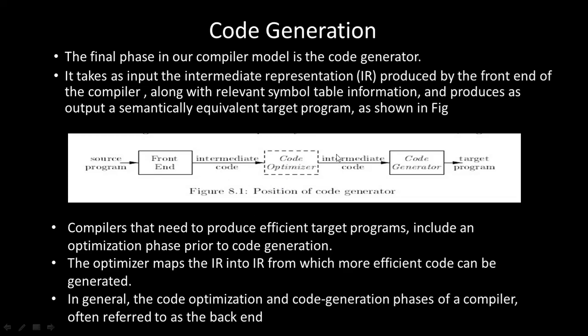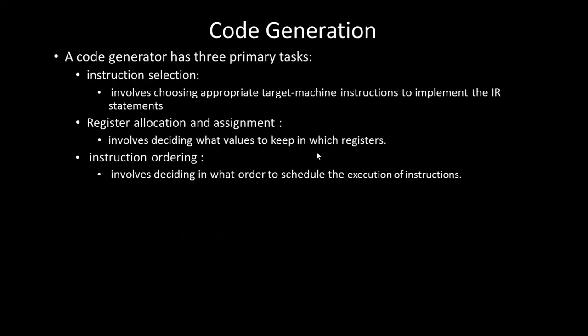The optimized intermediate code passes through the code generator phase. In general, the code optimization and code generation phases of the compiler are often referred to as the back-end. The three major primary tasks for the code generator are: first, instruction selection — choosing appropriate target machine instructions to implement the IR statements.